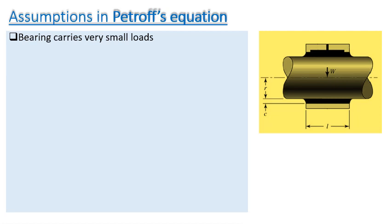From the figure, a journal is inside a sleeve or bearing. Small r is the radius of the journal, and the clearance between this journal and bearing is completely filled with oil of proper viscosity. It is assumed that the bearing carries very light loads, and Petroff's equation is applicable for lightly loaded bearings.